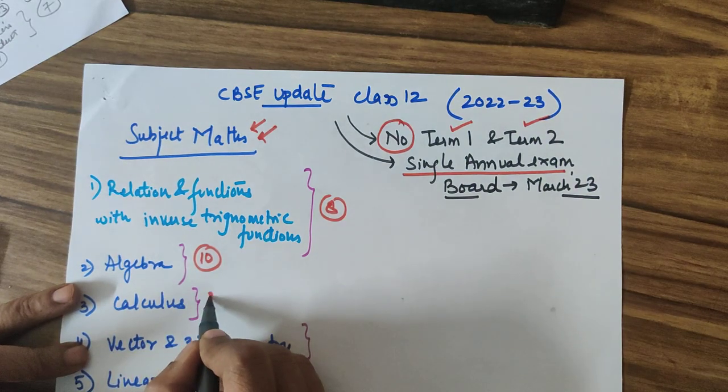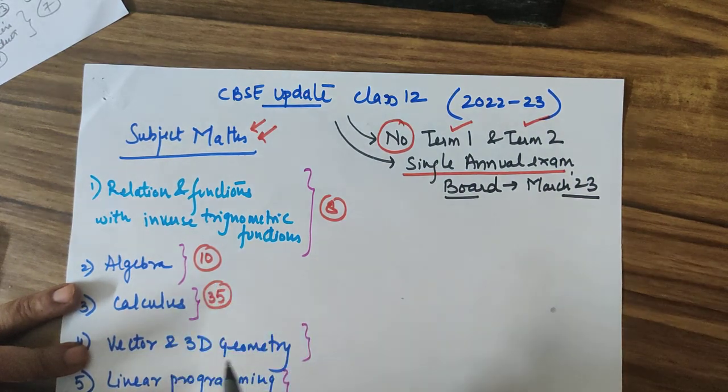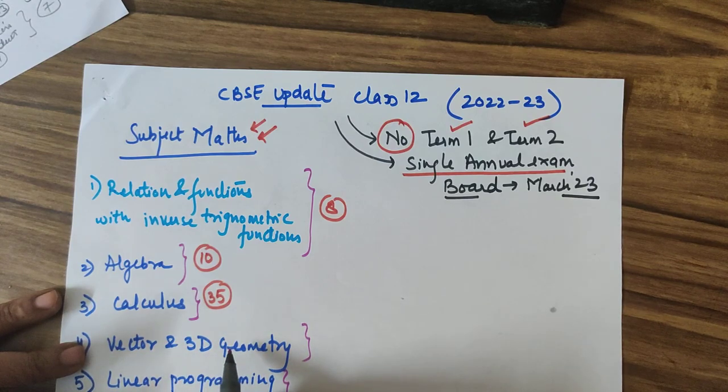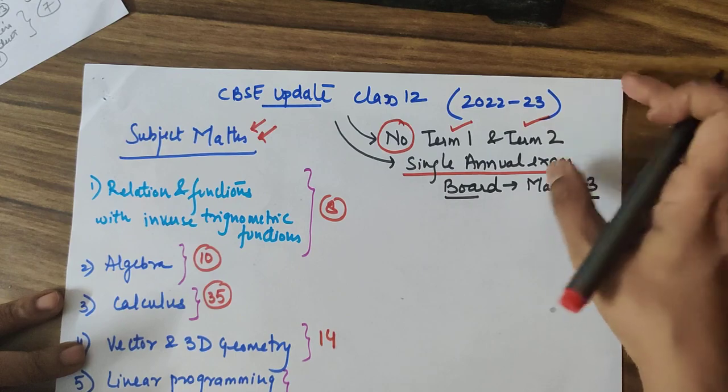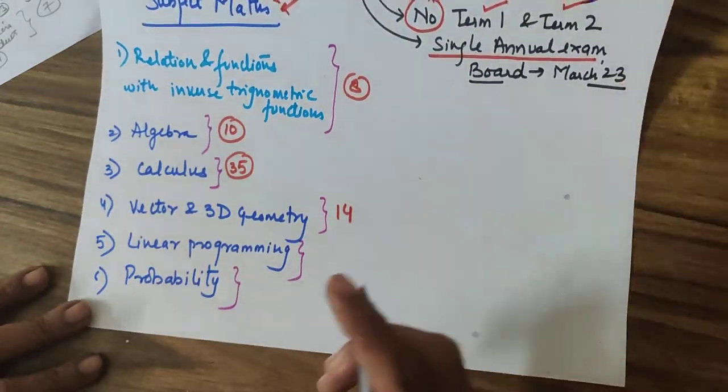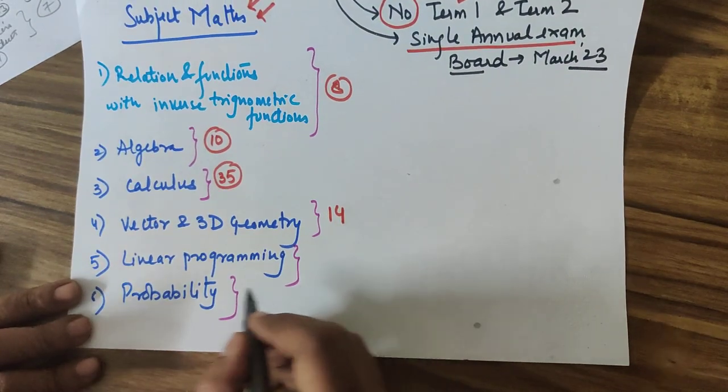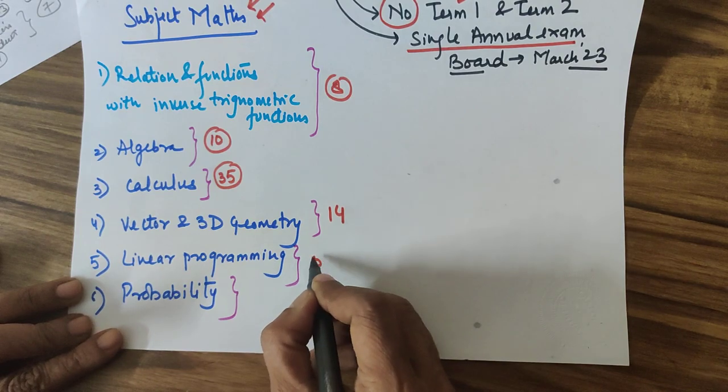Your calculus has a weightage of 35 marks. Vectors in 3D has a weightage of 14 marks. Linear programming is a topic of mathematics not of computer science. This has a weightage of 5 marks.